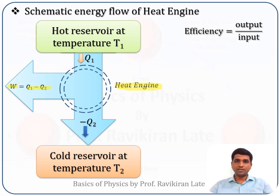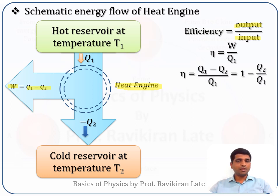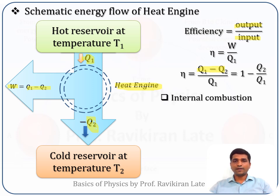The quality of a heat engine is determined by its efficiency, which is the output work divided by the input energy. Efficiency equals work obtained divided by heat given to the system: W over Q1. Since W equals Q1 minus Q2, efficiency equals 1 minus Q2 over Q1. There are two types of engines: internal combustion engines and external combustion engines.